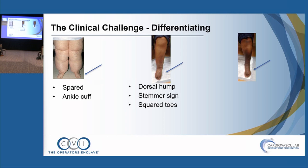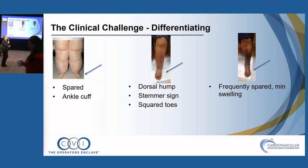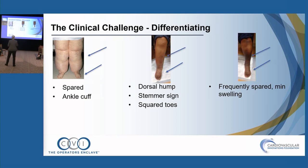In lymphedema, patients develop squared toes — they lose their normal contour. In venous insufficiency, the feet are frequently spared. You may have minimal swelling, particularly late in the day, but it is not a persistent or fixed swelling.